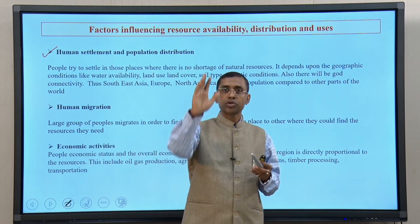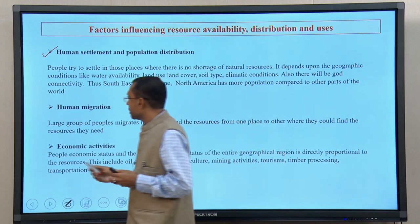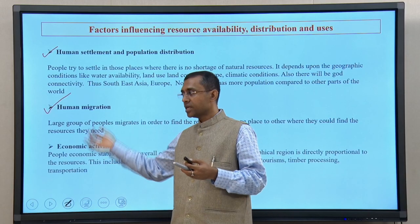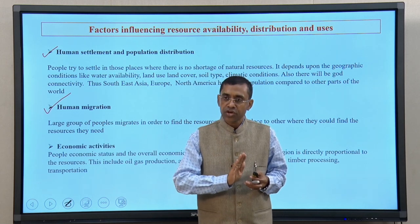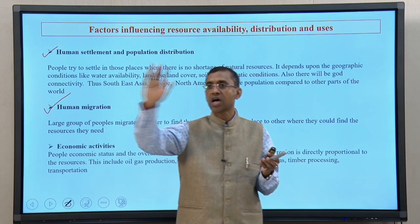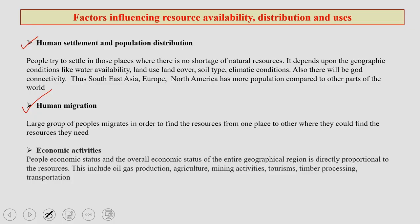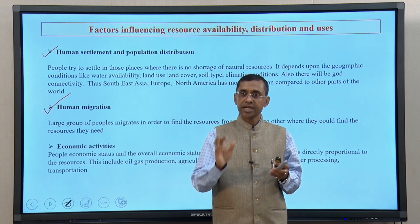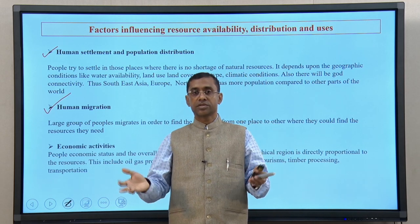So human settlement and population will be much higher there. The second point is human migration. There will be a natural tendency for large numbers of people to migrate to search for jobs, good soil, and good water — availability of resources in a much easier manner than where they are presently located. People will try to move to places where the opportunity for resource utilization and resource availability is much higher. Even human migration takes place in the quest for natural resources.